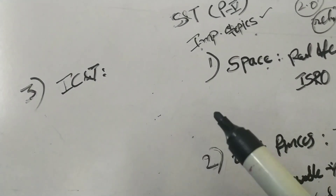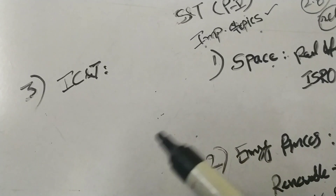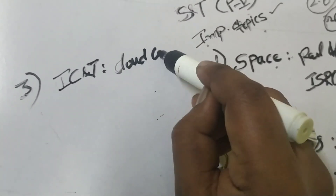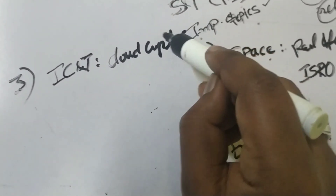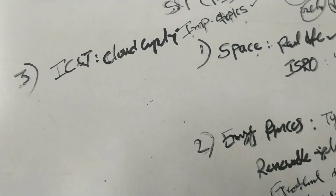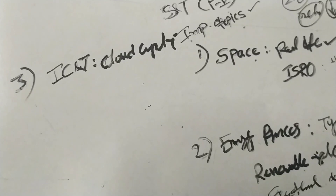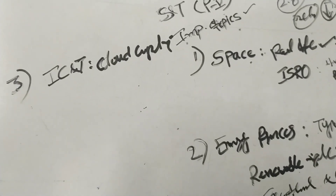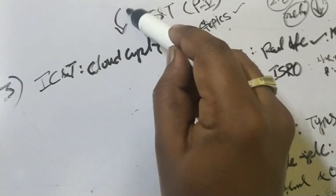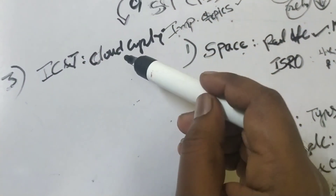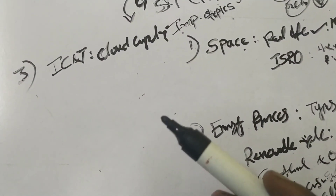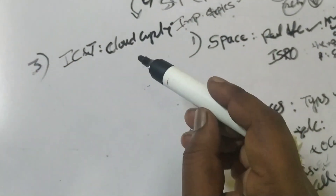Cloud computing is very important. Cloud computing is the delivery of services — you can use billing, storage, and software without owning them. Cloud providers deliver database, data networks, storage, software, and analytics. Everything can be done through cloud providers.